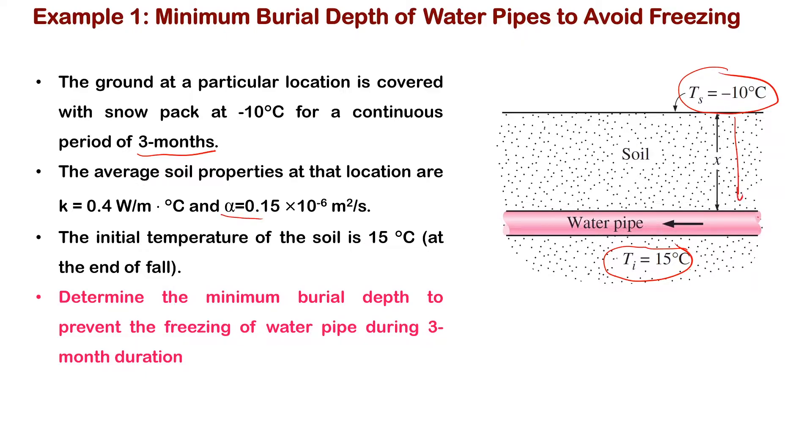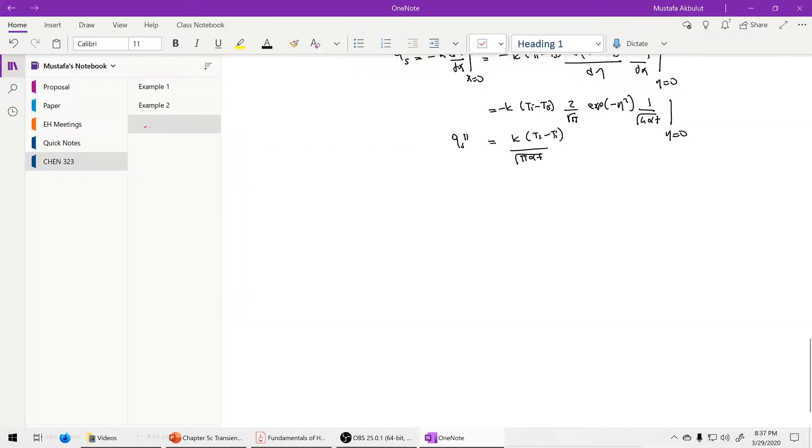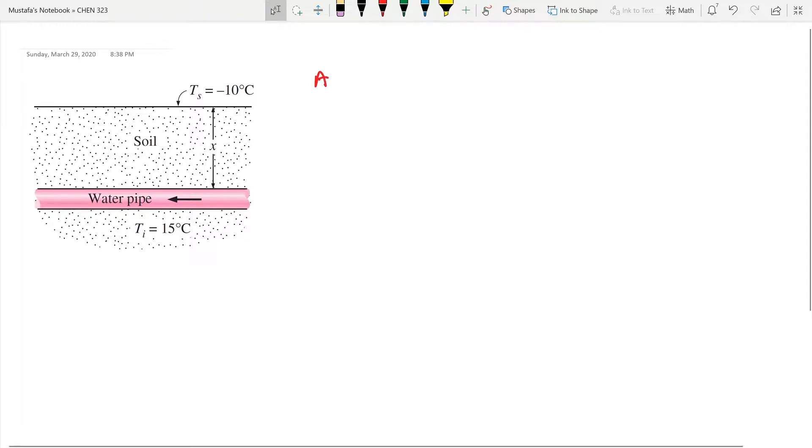I would like to know what should be the x distance that I should keep the pipe away from the surface to avoid the freezing. So how are we going to solve this problem? Let's start with the assumptions.